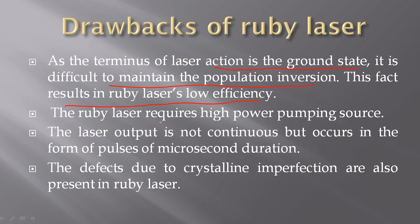The Ruby laser requires a high power pumping source. Because Ruby laser requires optical pumping — specifically the xenon flash tube pumping — it is a high power pumping source. This results in heating of the apparatus.